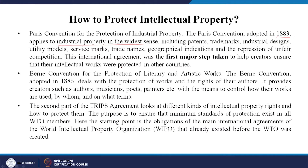After the Paris Convention came the Berne Convention for the Protection of Literary and Artistic Works, adopted in 1886. It deals with the protection of works and the rights of their authors. It provides creators such as authors, musicians, poets, and painters with the means to control how their works are used, by whom, and on what terms. The second part of the TRIPS agreement looks at different kinds of intellectual property rights and how to protect them.